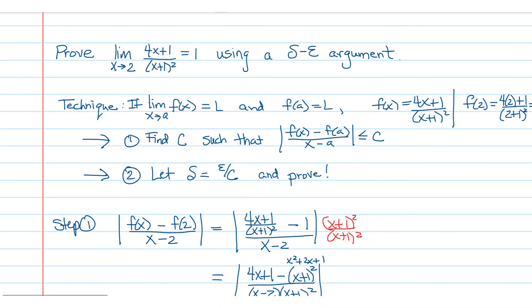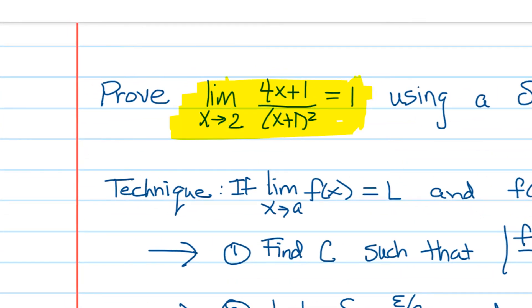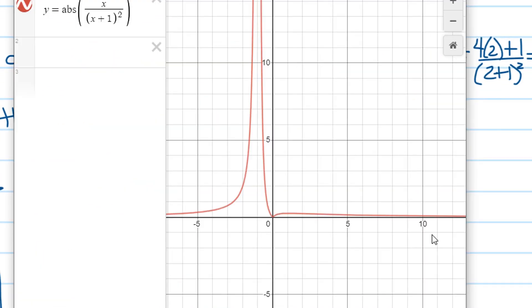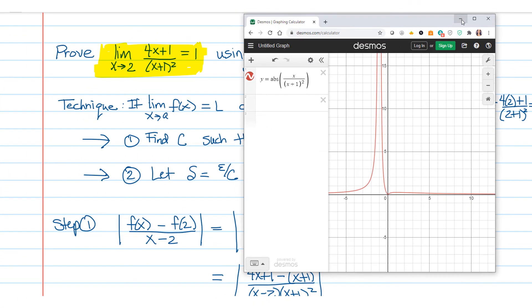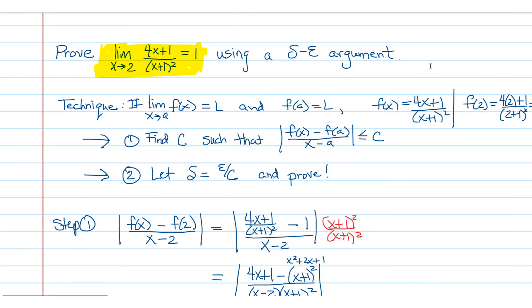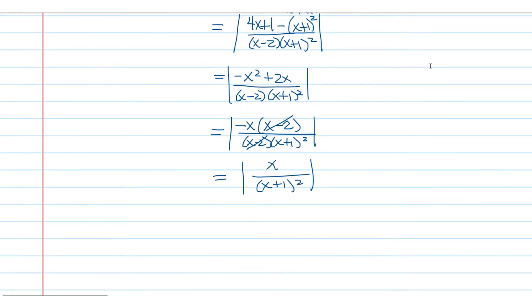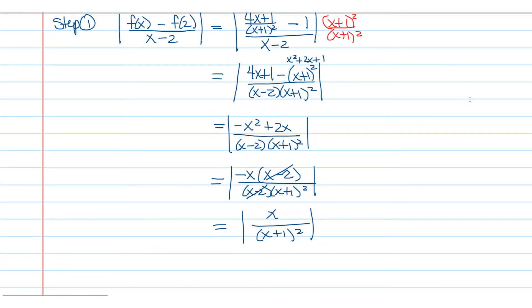Let's recall what limit we're trying to work out. We're trying to prove this limit. Limits are all about what's happening near that particular x value, so we're concerned about what's happening when x is very close to 2. Close to 2 we don't have a problem.